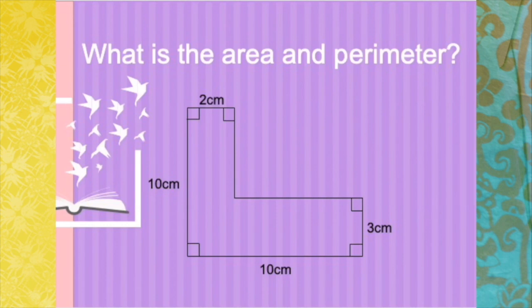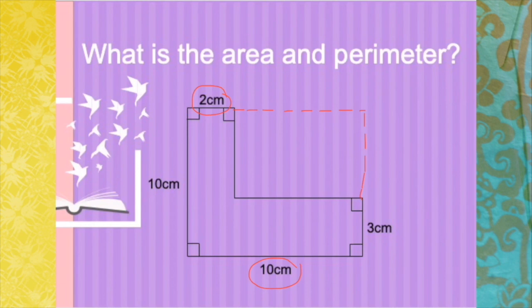The first step in the subtractive method is we extend the sides to form a bigger shape. So since you have 2 centimeters on top and 10 centimeters, and we know that opposite sides are equal in measure. So if that is 2, the remaining part here would be 10 minus 2, which is 8 centimeters. On the opposite side, you will have 10 and the measure on the right side is 3 centimeters. Therefore, 10 minus 3 will be 7 centimeters.